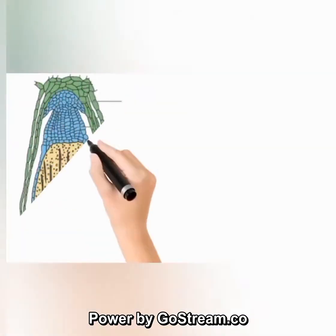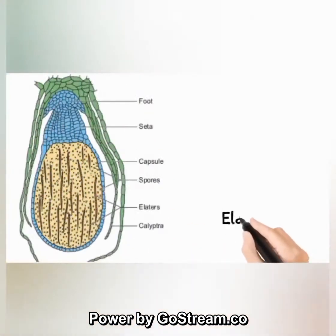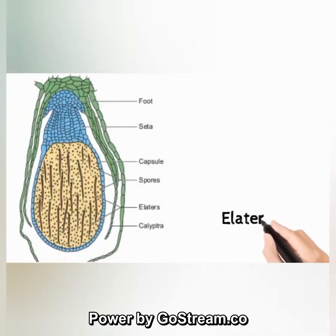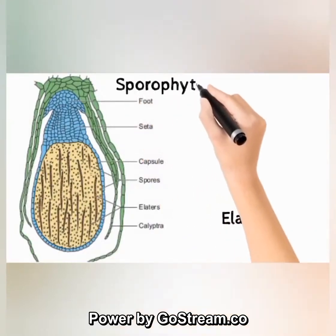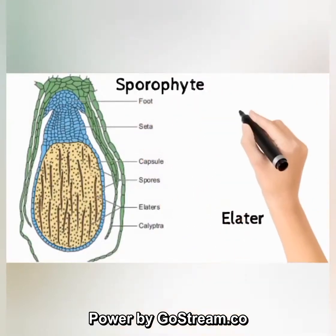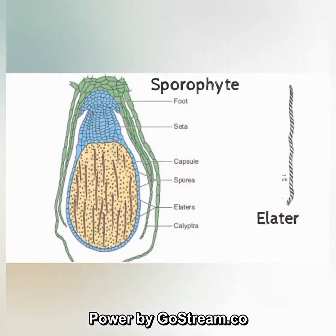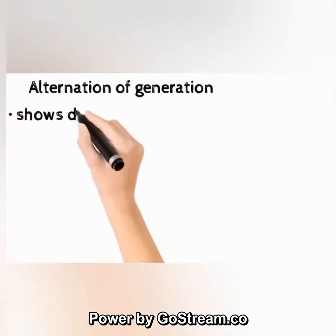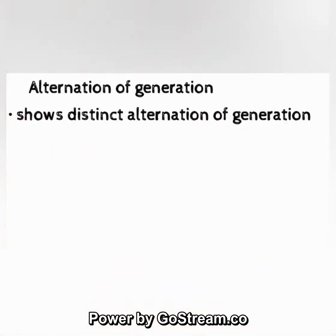A diagram of the sporophyte and elaters is shown here. Please note the structure and function of elaters, as this may be a sure and simple question worth two marks in your exam. Marchantia shows distinct alternation of generation; the gametophyte is the dominant phase. Both haploid and diploid phases are represented by multicellular structures.